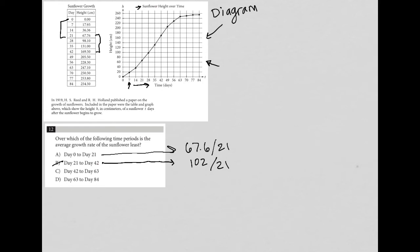Over which of the following time periods is the average growth rate of the sunflower least? So B is higher than A. That's why B is crossed out. How about choice C? Choice C is day 42 to day 63.